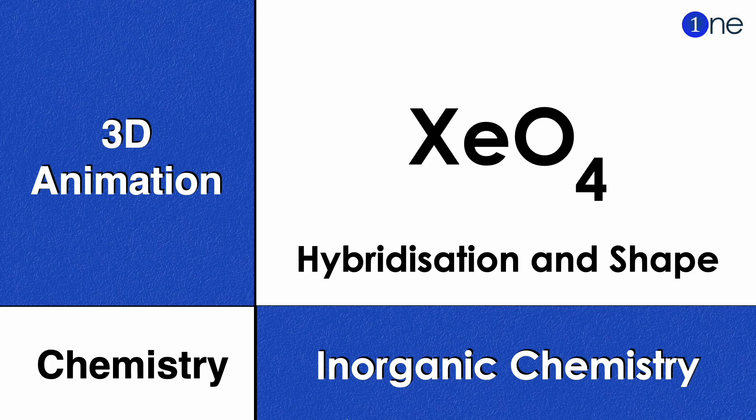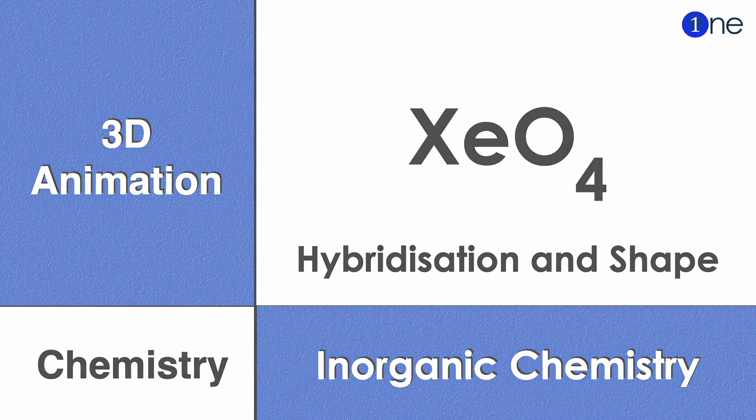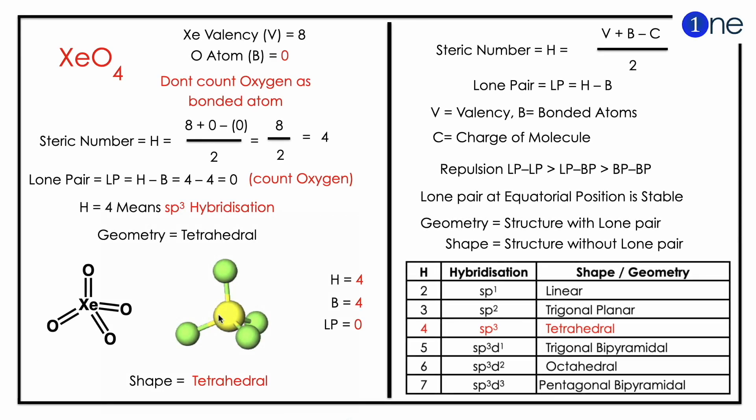Welcome to One Inorganic Chemistry. We are going to find the hybridization and shape of xenon tetroxide. We will use animation for our understanding. Let's find it. To find the hybridization, you should know the steric number, which is H equals